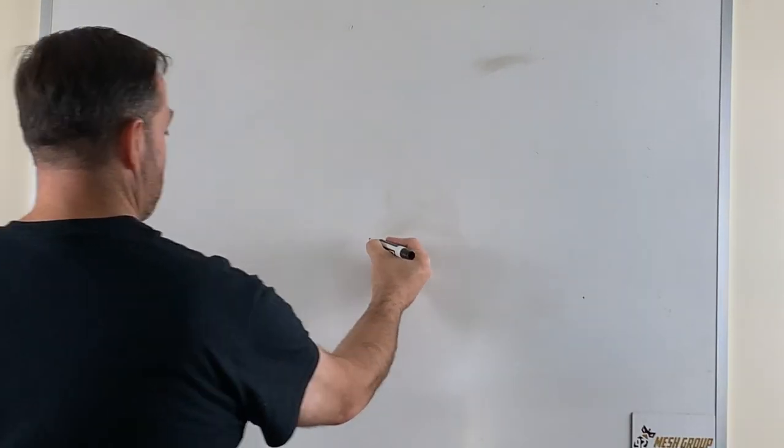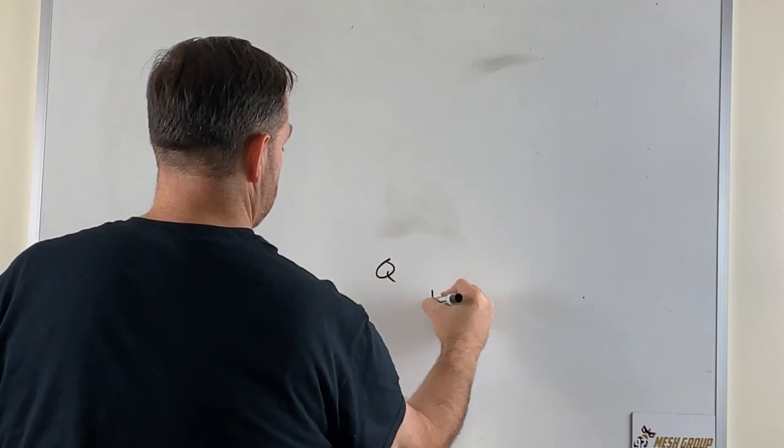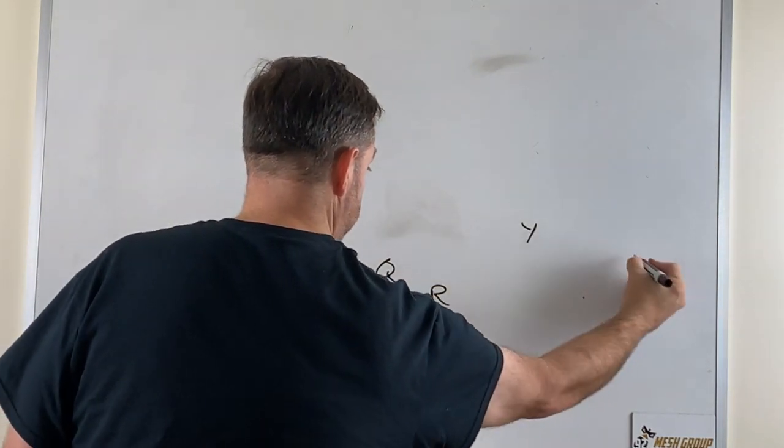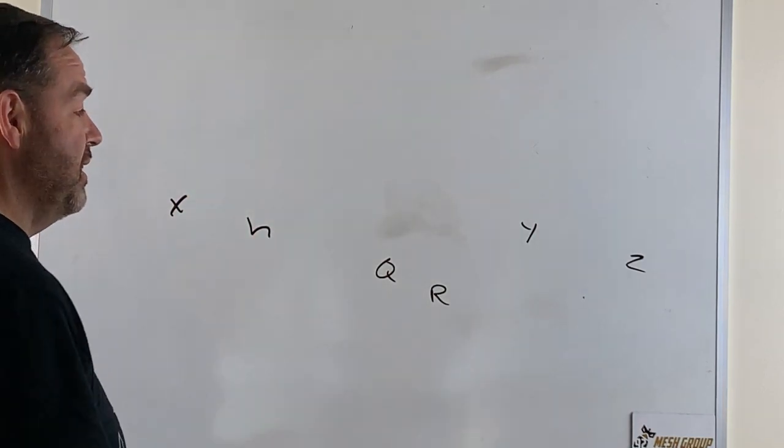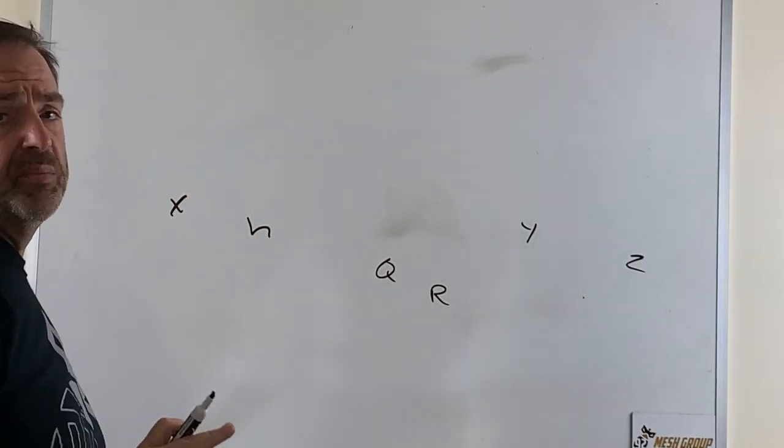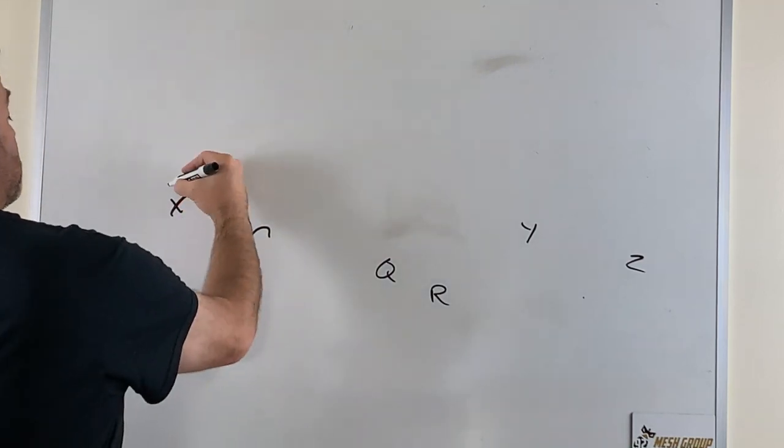So basically what we start off with is we'll start off in doubles, an ace, and what we're going to teach is the front side of the play because the back side of the play pretty much stays the same.